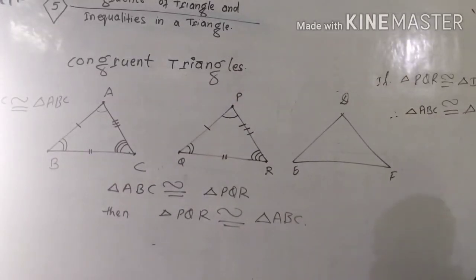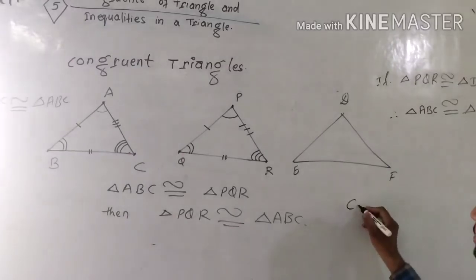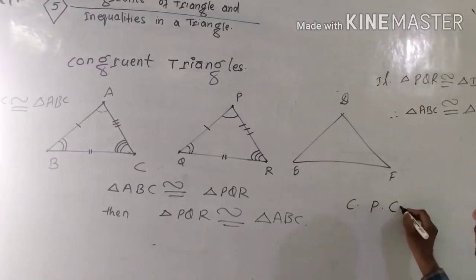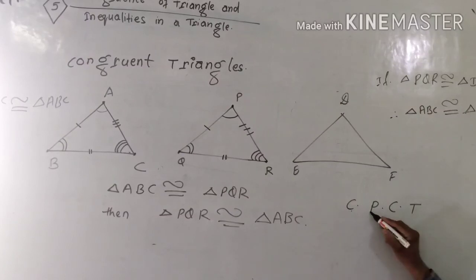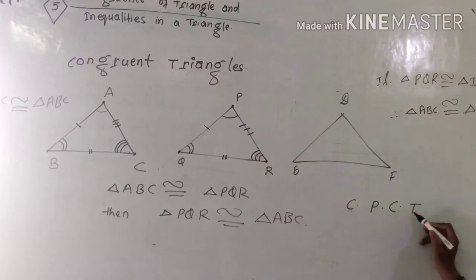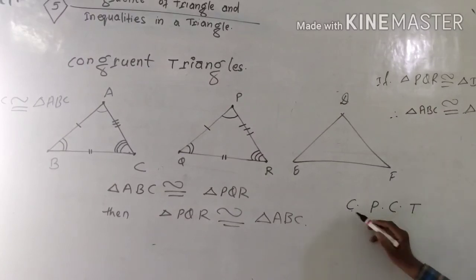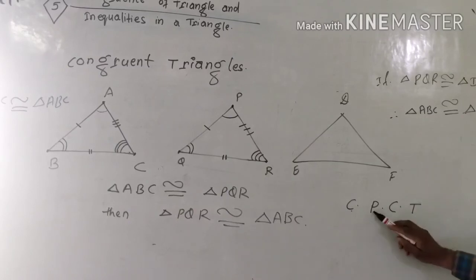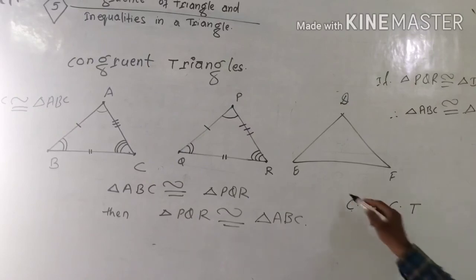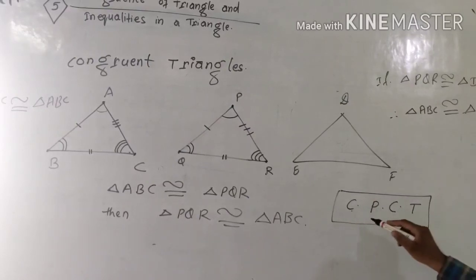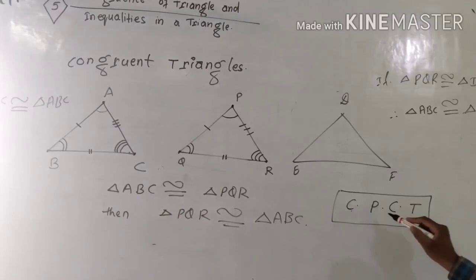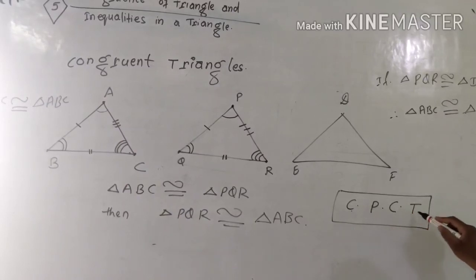We shall use the abbreviation CPCT — C-P-C-T — which stands for Corresponding Parts of Congruent Triangles.